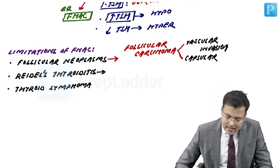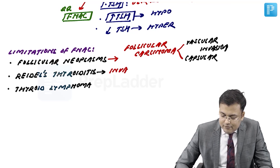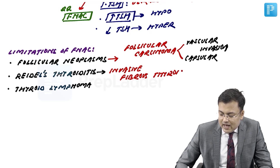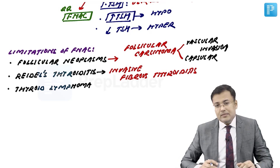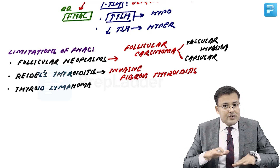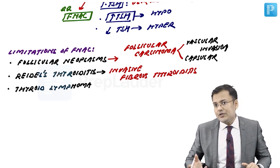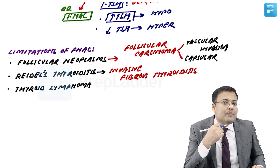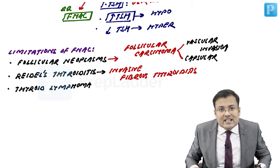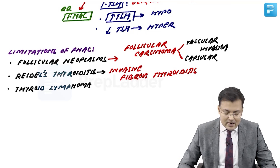The second limitation is Riedel's thyroiditis, also known as invasive fibrous thyroiditis. In Riedel's thyroiditis, there is complete replacement of the thyroid and parathyroid by fibrous tissue. If FNAC is performed, there is very poor yield or no yield at all.